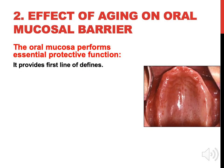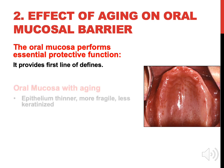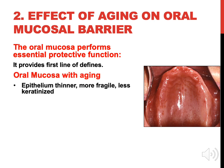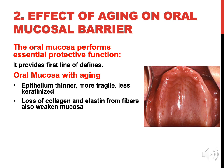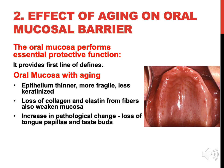Effect of aging on the oral mucosal barrier: the oral mucosa performs essential protective functions and provides the first line of defense. With aging, the oral mucosa epithelium becomes thinner, more fragile, and less keratinized. There is loss of collagen and elastin from fibers, which also weakens the mucosa. There is an increase in pathological changes, loss of tongue papillae and taste buds, and minor salivary glands diminish.